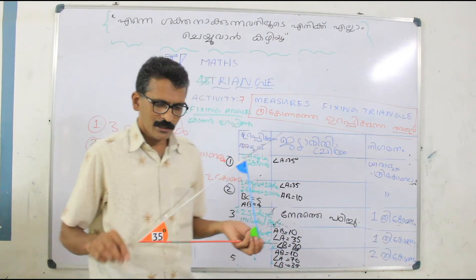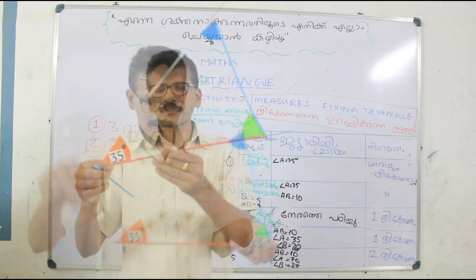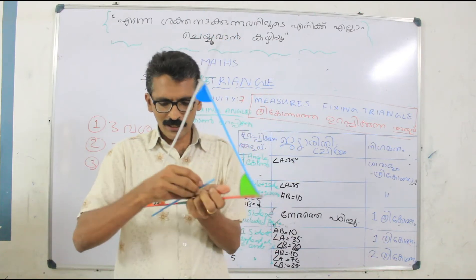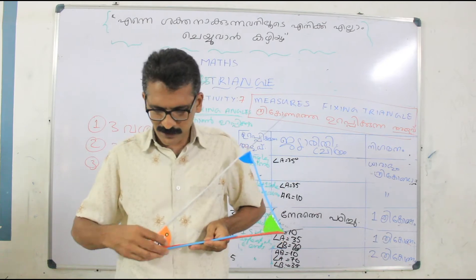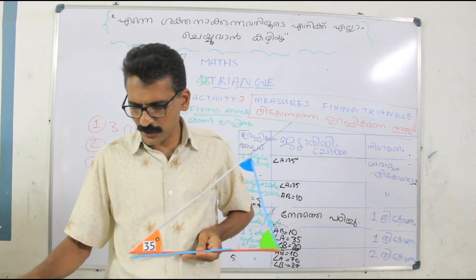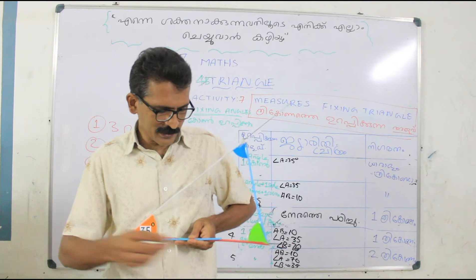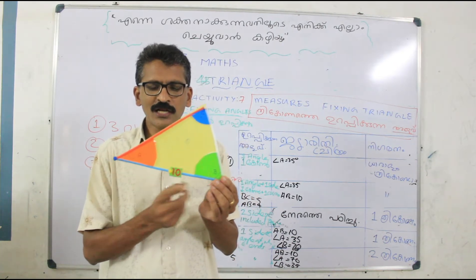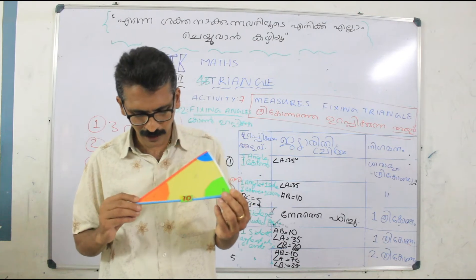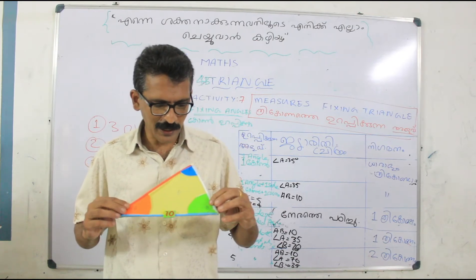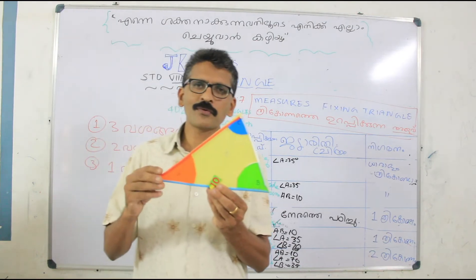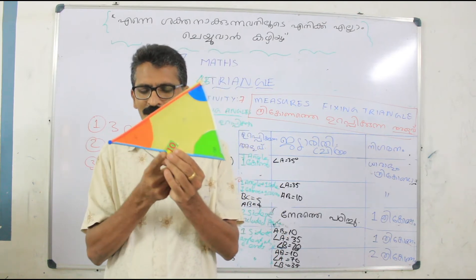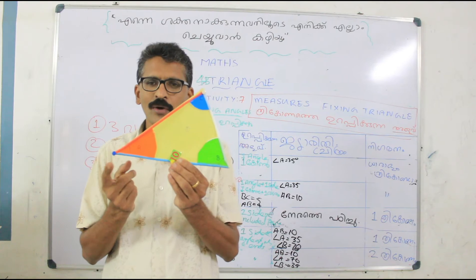Since the arms are moving, let us fix one arm to 10 units. If we know this arm as 10 units and one angle A and the other angle B, then we can get only one triangle. So if we fix this arm, we will get only one triangle.